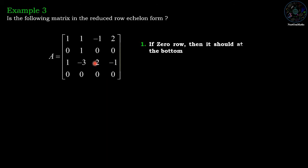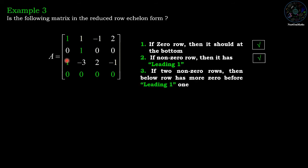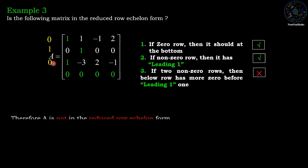Example three: first condition — zero row at the bottom, correct. Second condition — leading one: the first, second, and third rows all begin with a leading one, satisfied. Third condition: in the first row there are zero zeros before the leading one, in the second row one zero, and in the third row zero zeros. First and second rows satisfy the condition, but the third row has fewer zeros than the second row, so condition three is violated. Hence this matrix is not in reduced row echelon form.